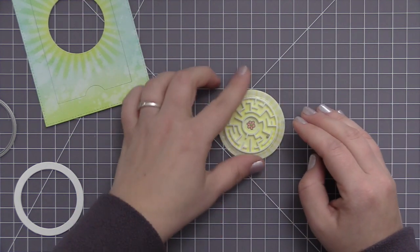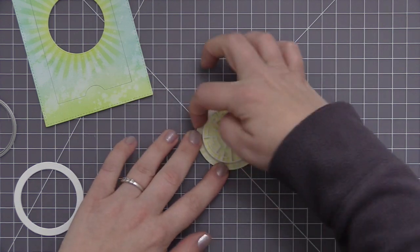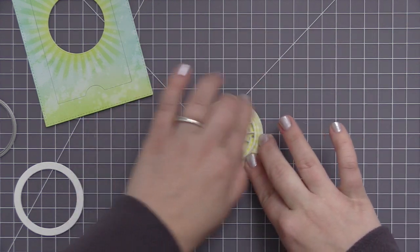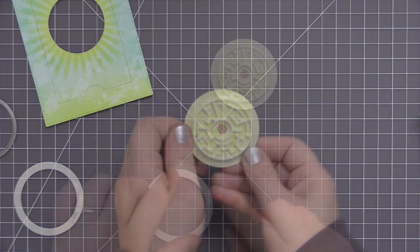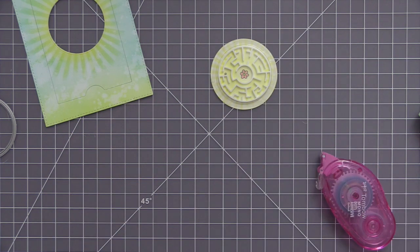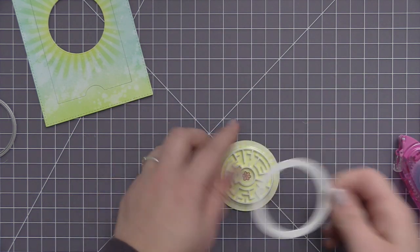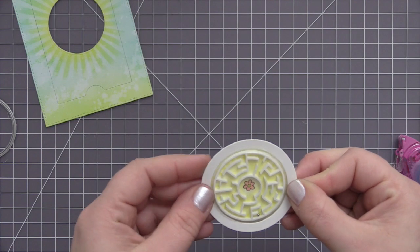So I have the circle shaker pouch, I put some adhesive on the back of that and I'm adhering it down onto that little circle panel that we've created. That is going to completely enclose my maze inside the circle shaker pouch.